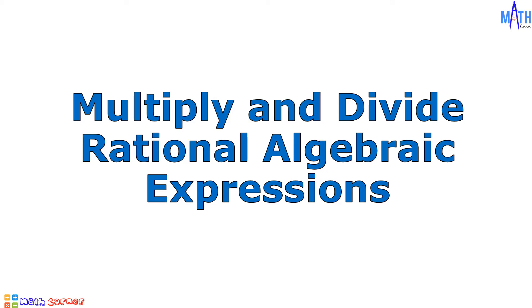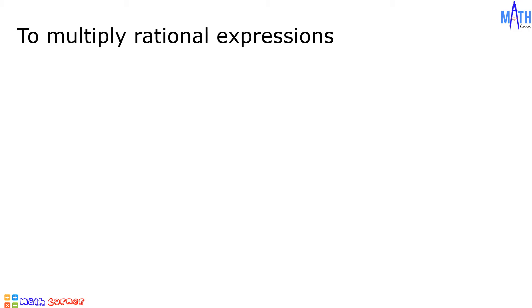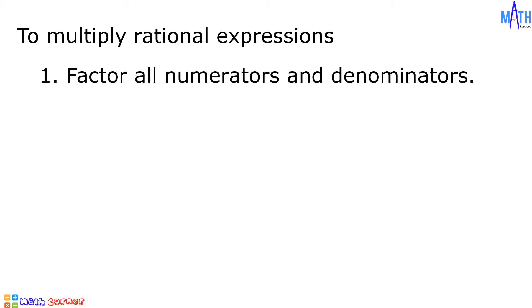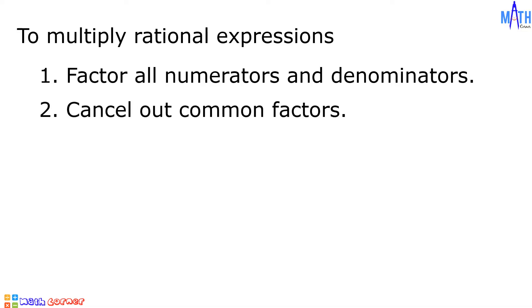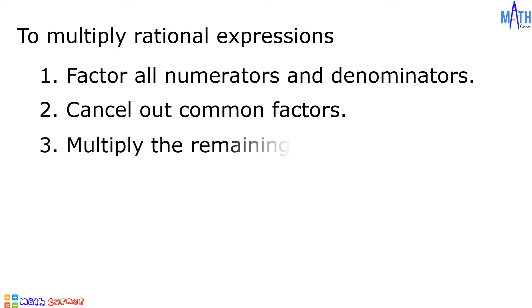In multiplying rational expressions, step number one, we will factor all numerators and denominators. Number two, cancel common factors. And number three, multiply the remaining factors.